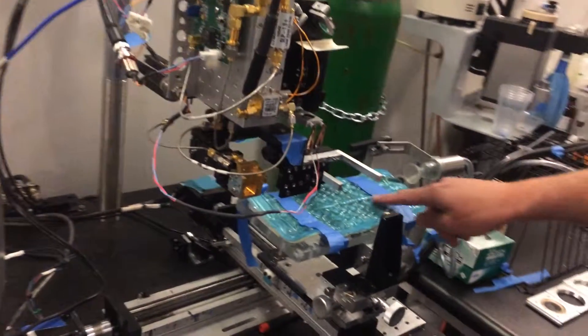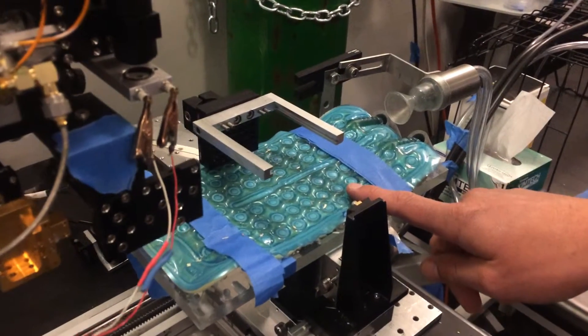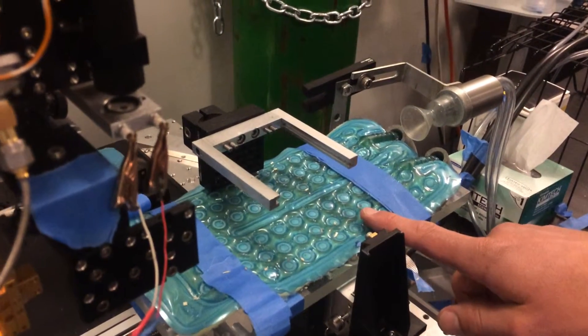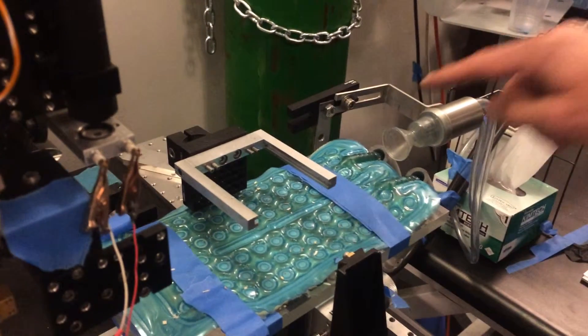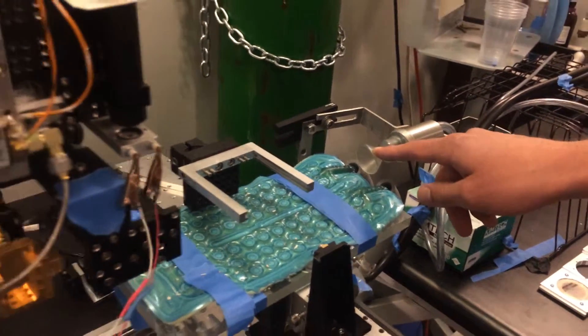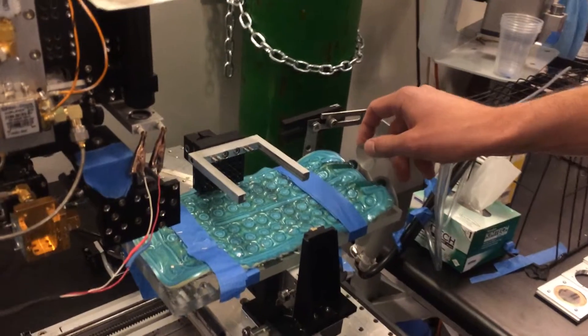The rat sits here. This is the heating pad to keep it warm because it's anesthetized, so it's asleep. And once it's asleep, it can't regulate its body temperature as well, so you have to keep it warm. Nose cone for general gas anesthesia. We keep this thing knocked out the entire time while we're imaging.